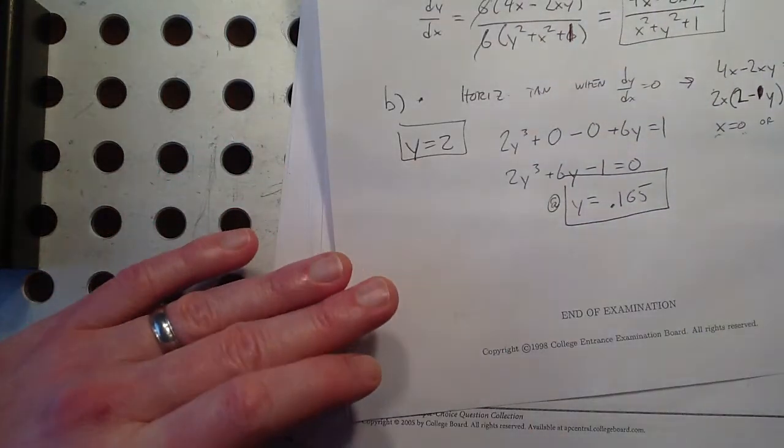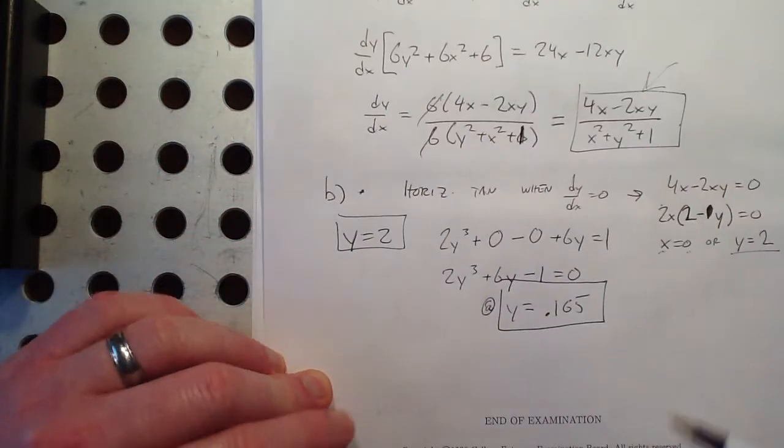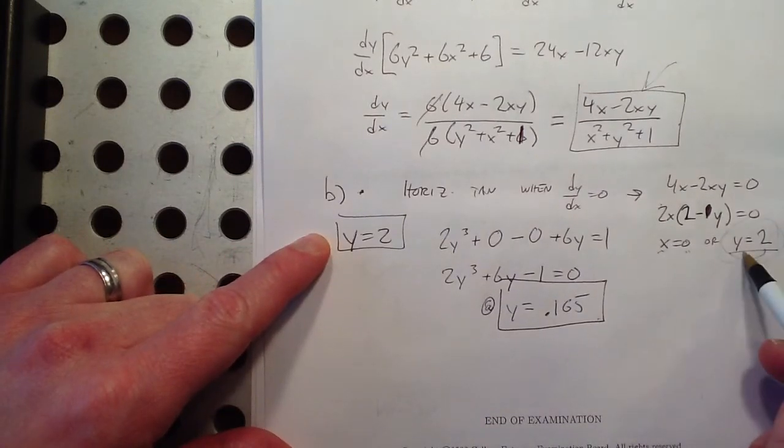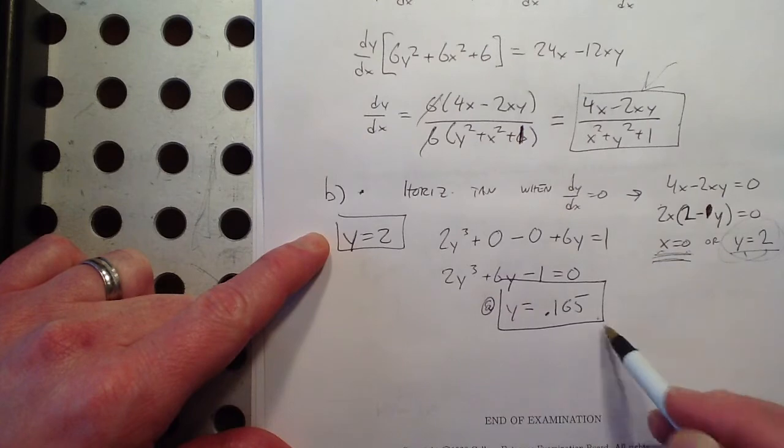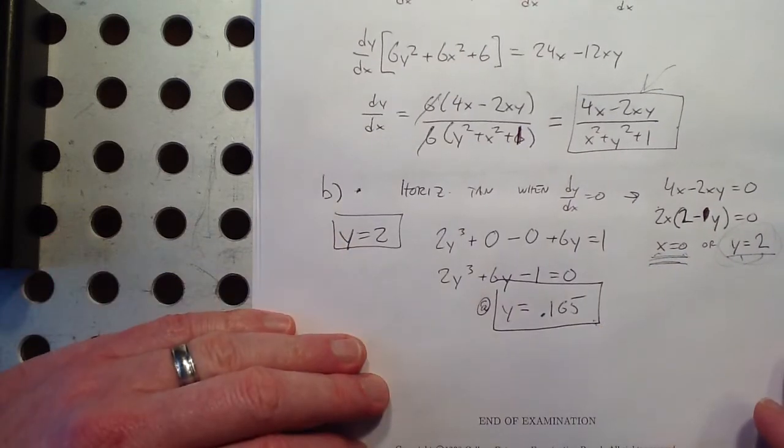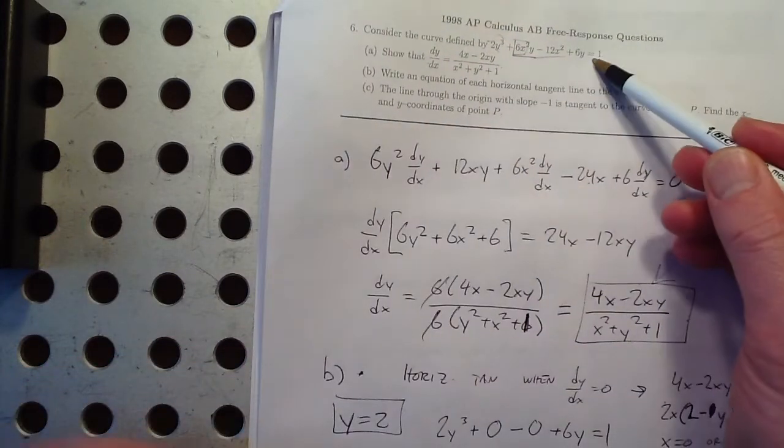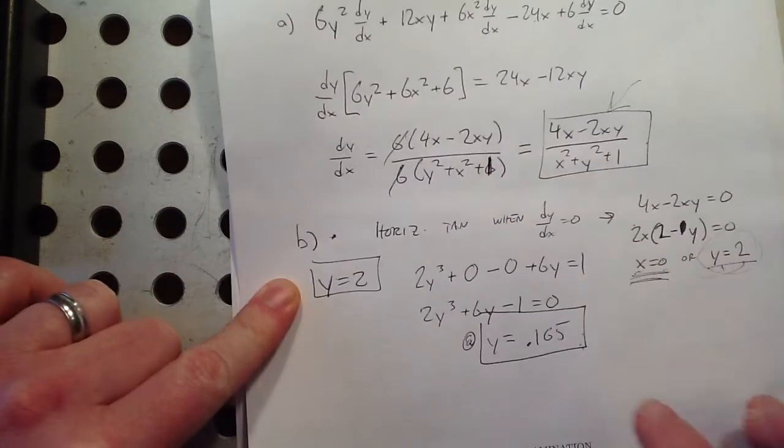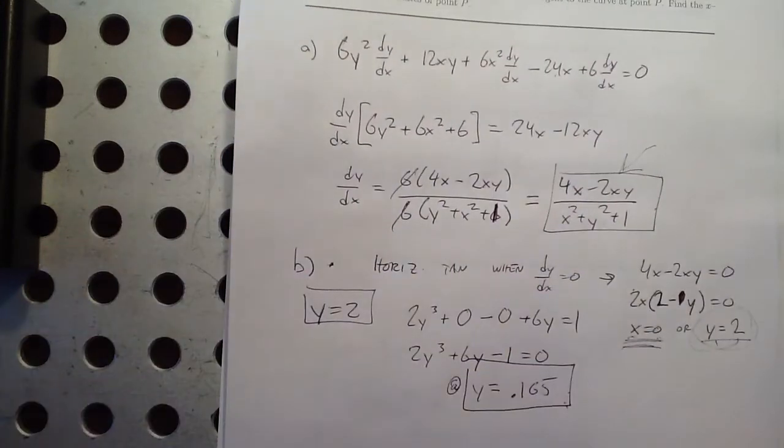All right, equations for horizontal lines are just y equals whatever. So there are 2 of them, right? One of them, we just got the y equals. But this one, since it was x equals, we had to find the y value that goes with that. So whatever this crazy curve looks like, it has 2 horizontal tangent lines here and here.